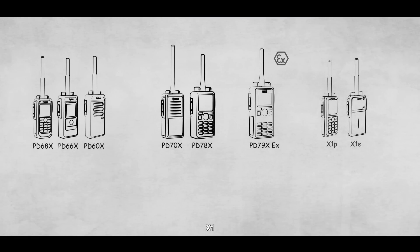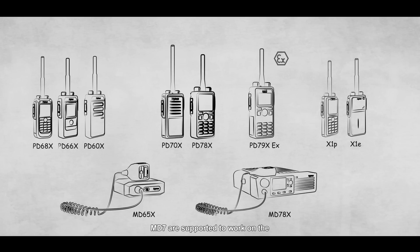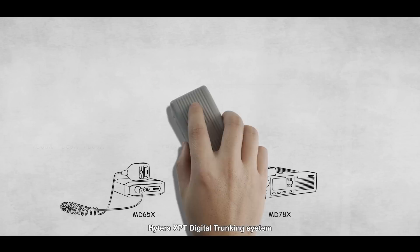Subscriber models including PD-6, PD-7, X1, MD-6, and MD-7 are supported to work on the Hytera XPT digital trunking system.